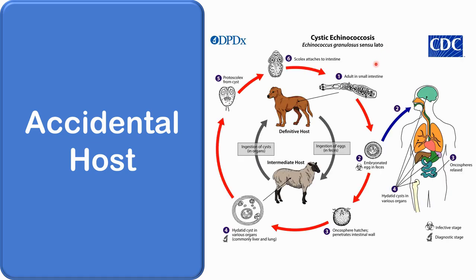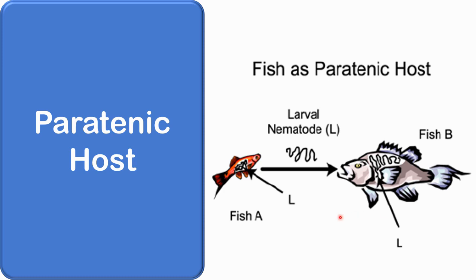An accidental host is the one in which the infection is not normally found — as in man for cystic echinococcosis or hydatid cysts. A paratenic host is one in which the larval stage of the parasite remains viable without further development. Such a host transmits the infection to another host — for example, fish is a paratenic host for the larva of Diphyllobothrium latum.